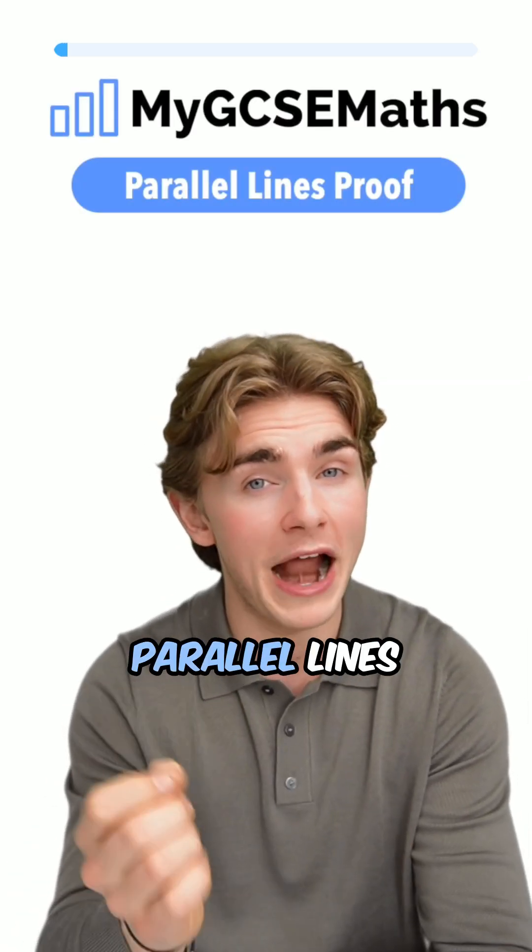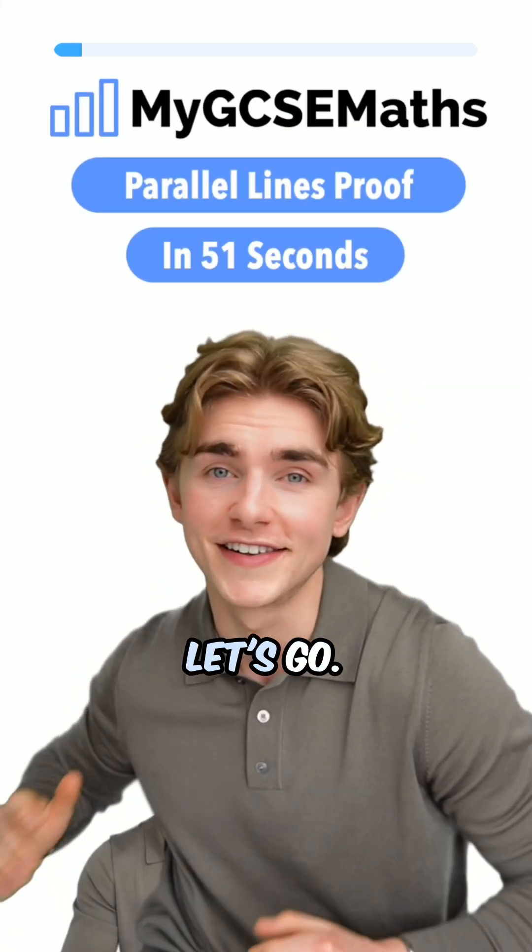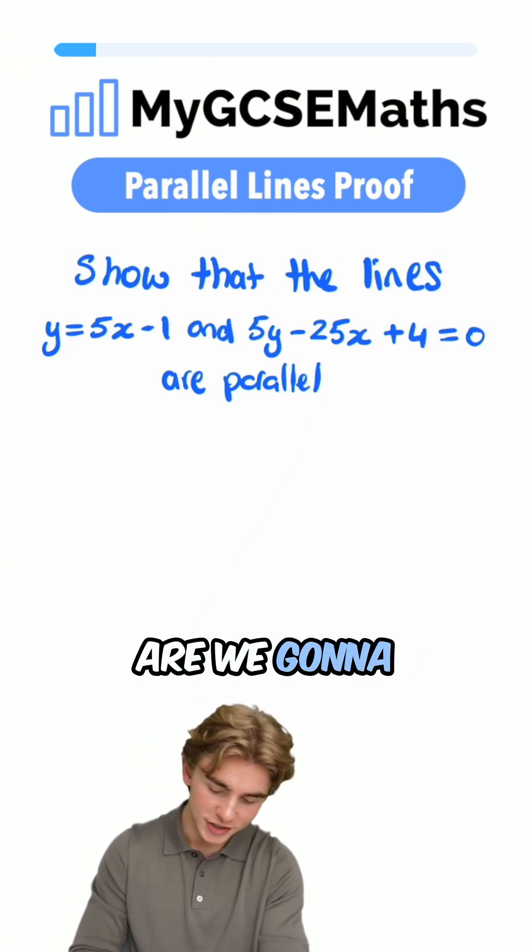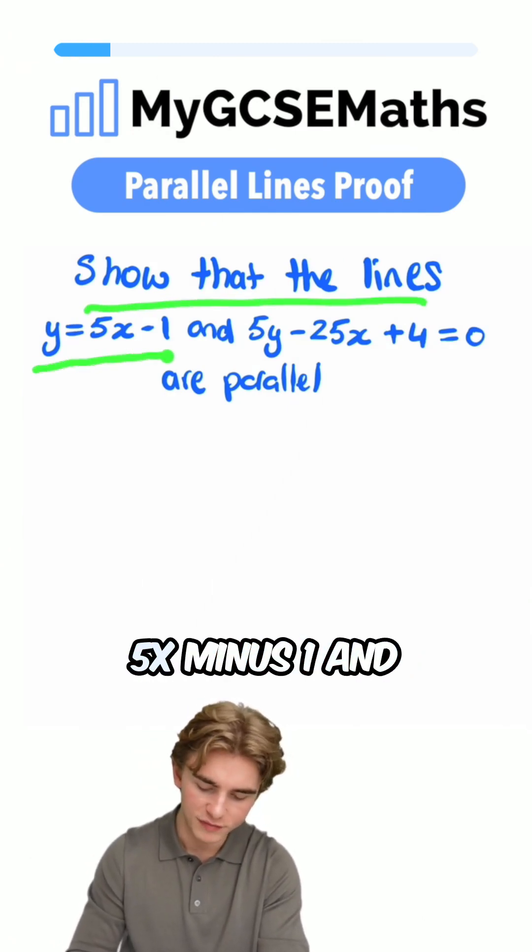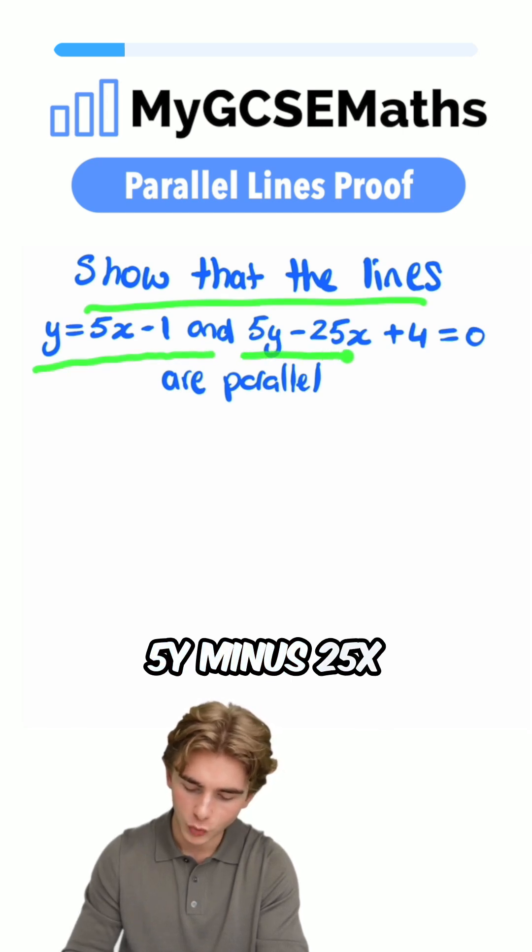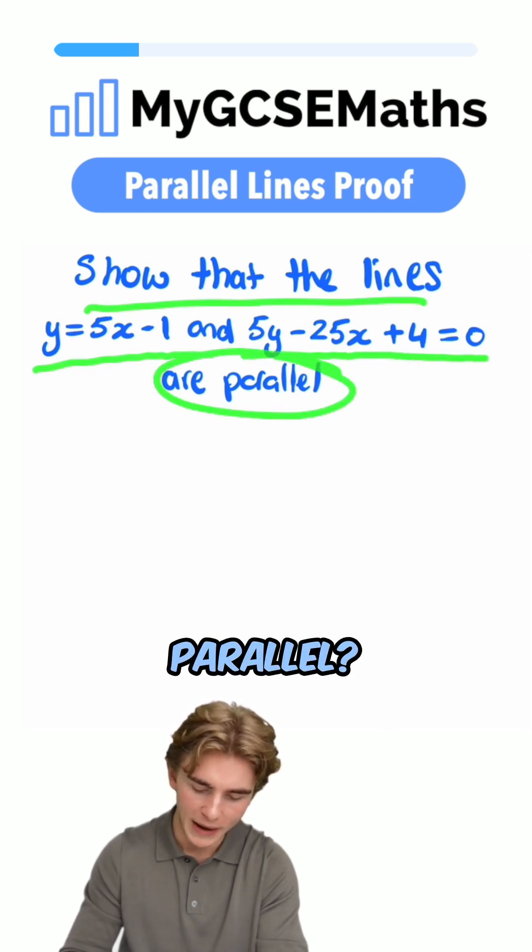GCSE maths proof with parallel lines in 51 seconds. Let's go. Okay guys, how are we going to show that the lines y equals 5x minus 1 and 5y minus 25x plus 4 equals 0 are parallel?